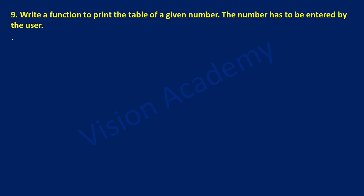So let us take a variable called a of type integer, and inside the round bracket we will take an input function. Here in double quotation marks I will ask the user to enter the number. End the double quotation mark and close the brackets.